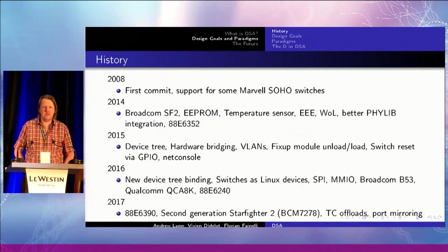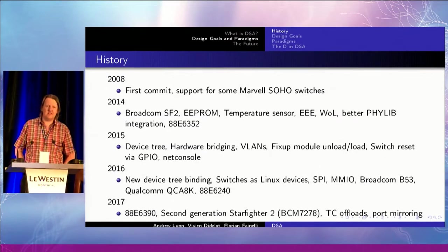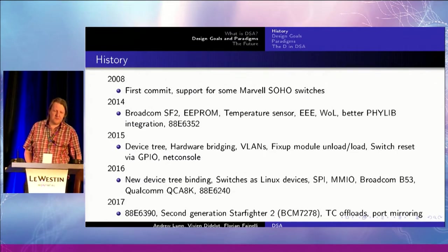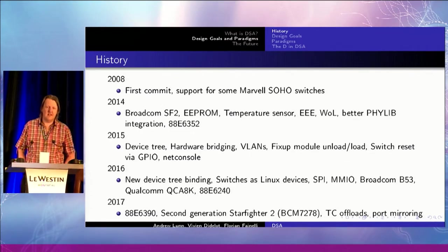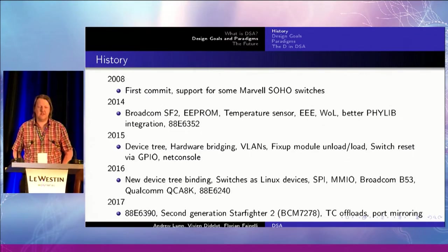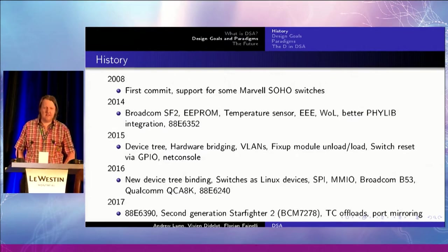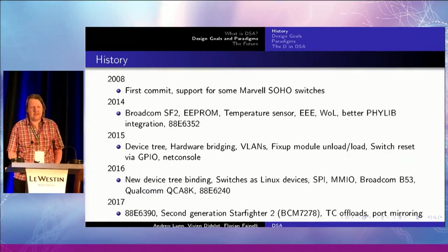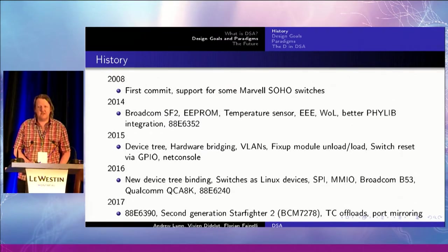Being able to reset the thing, NetConsole, just generally making it more feature-rich. Then we discovered that we'd done the device tree binding wrong because of various architectural problems. The switches weren't actually Linux devices, so we changed all that and made them Linux devices. That allowed us to use SPI-based switches or memory-mapped IO switches. That opened up the path to get the Broadcom switch in, which is generally SPI or memory-mapped IO. Qualcomm came along and gave us their switch and yet another Marvell switch. 2017: more Marvell, more Starfighters. Then some interesting things started happening like TC offloads. We're starting to catch up on the top-of-rack boards.